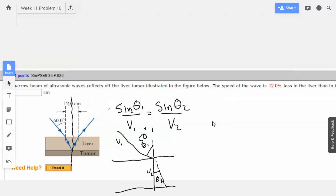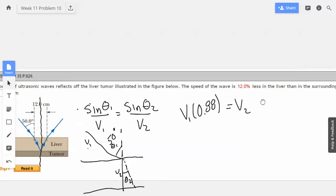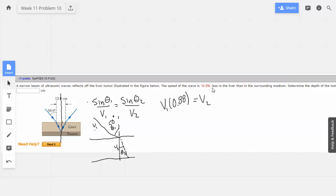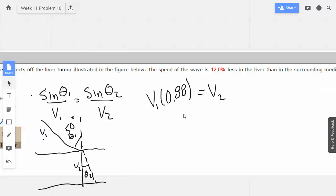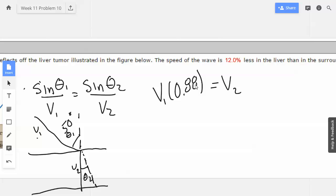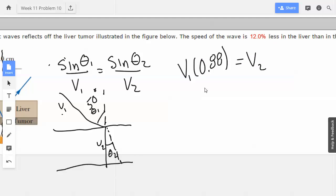So now let's say what we know. Velocity 1 times 0.88, which is 100% minus 12%, which is 88%, is V2. Because we know that V2 is slower than V1. A little bit less from V1 will give you V2.